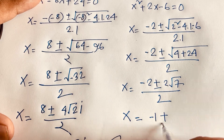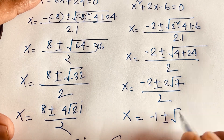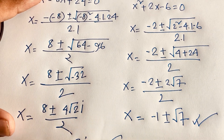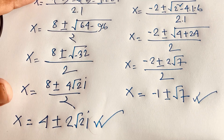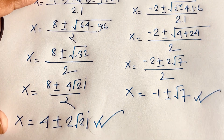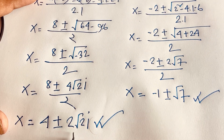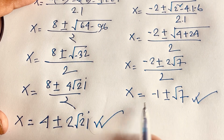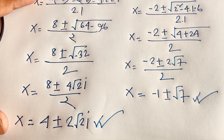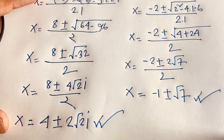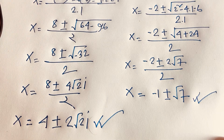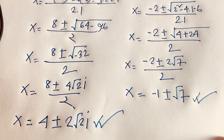Dividing both values by 2, the real solution is x = -1 ± √7. So our final answers are x = 4 ± 2√2·i (complex solution) and x = -1 ± √7 (real solution). Thank you all — if you enjoyed this video, please subscribe to my channel for other interesting videos. Goodbye, take care.